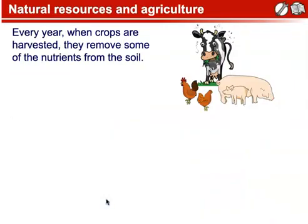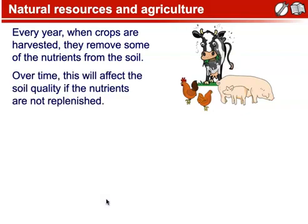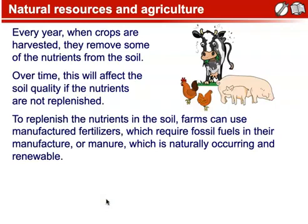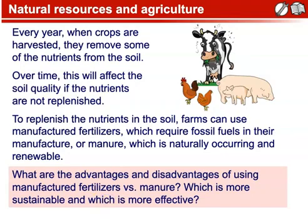Natural Resources in Agriculture. Every year when crops are harvested, they remove some of the nutrients from soil. Over time, this will affect the soil quality if the nutrients are not replenished. To replenish the nutrients in the soil, farms can use manufactured fertilizers, which require fossil fuels in their manufacture, or manure, which is naturally occurring and renewable. What are the advantages and disadvantages of using manufactured fertilizers versus manure? Which is more sustainable, and which is more effective?